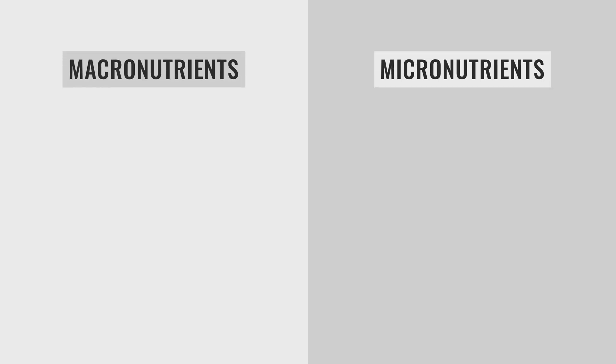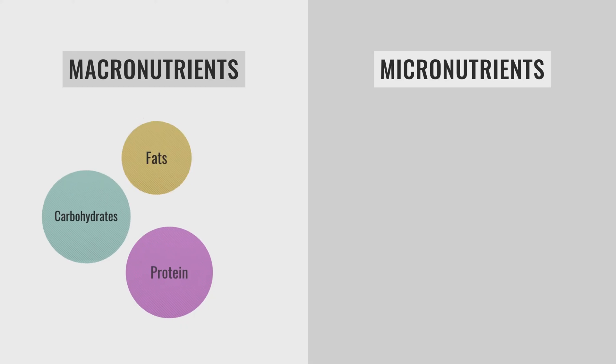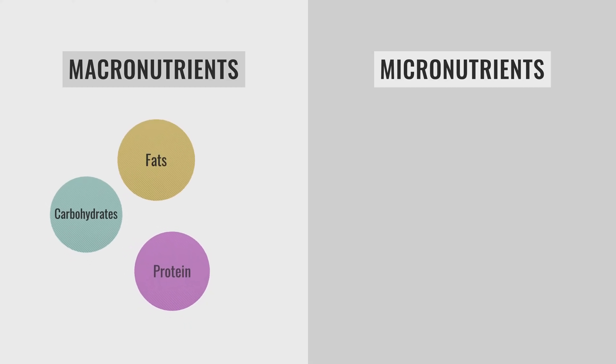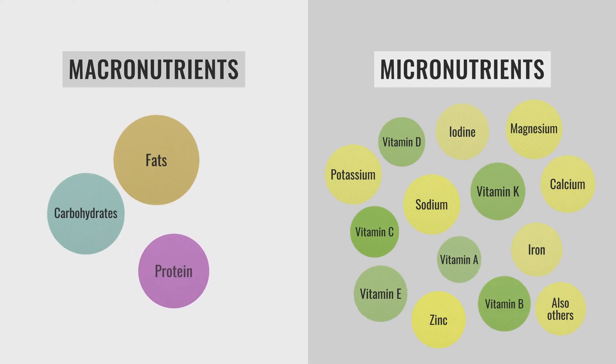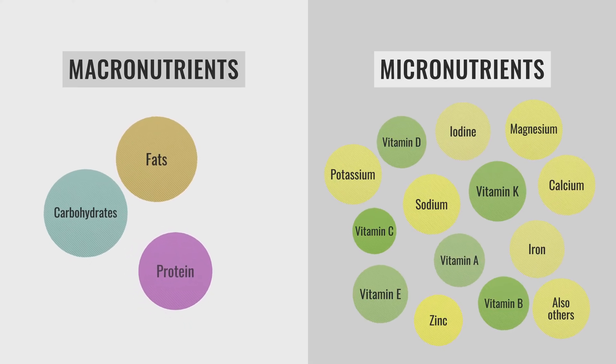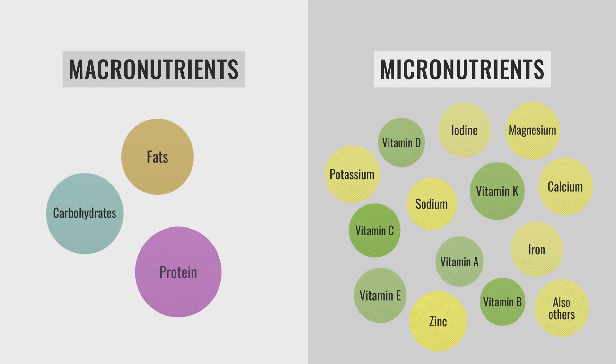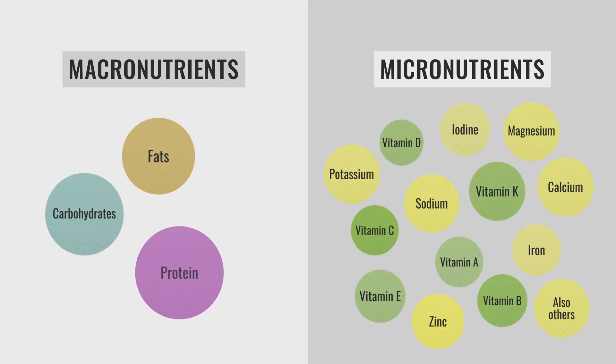So macro means big and micro means small. It's basically two different types of nutrients. Macronutrients — there are only three of them: protein, carbs, and fat. Micronutrients are all your other nutrients, basically vitamins and minerals. There's a ton of them.